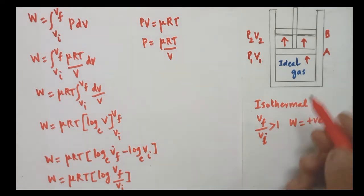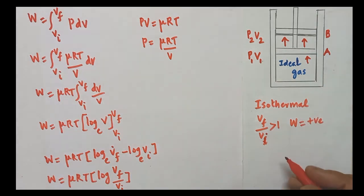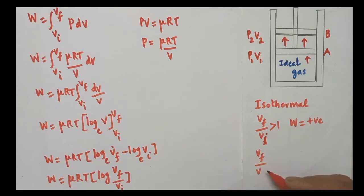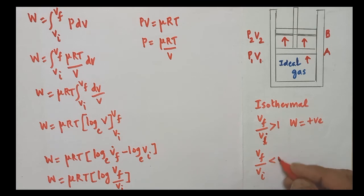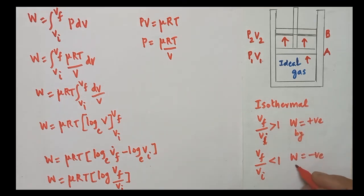In the case of isothermal compression, the gas is compressed and VF is less than VI. The ratio VF/VI is less than 1, so work done is negative. Work done by the gas is positive for expansion, while work done on the gas is taken as negative.